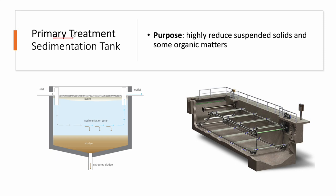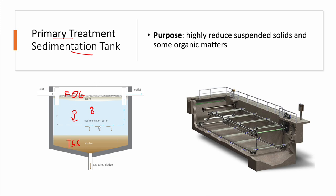After the equalization tank we begin primary treatment. A primary treatment usually consists of a simple sedimentation tank — a physical treatment where heavy materials settle by gravity to form sludge, while floating material rises to form scum. Only the clarified water passes to the next stage. In this stage we remove TSS which forms the sludge — that will undergo further treatment — and also fat, oil, and grease (FOG), which forms the scum.